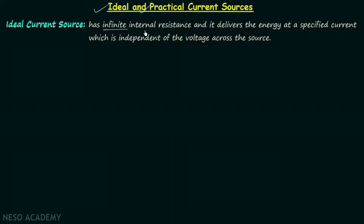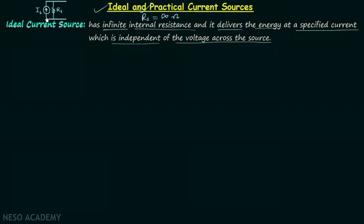An ideal current source has infinite internal resistance, meaning the source resistance RS is equal to infinite ohms. It delivers energy at a specified current, and this current is independent of the voltage across the source. In a current source, the source current IS is provided in parallel with the source resistance RS, and together they form the current source.